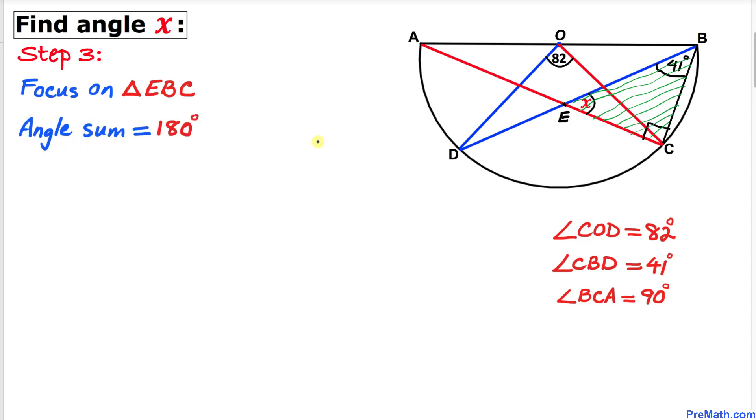this angle, and this angle, must be 180 degrees. So let me write it down: X plus 41 degrees plus 90 degrees equals 180 degrees. So X plus this is going to give us